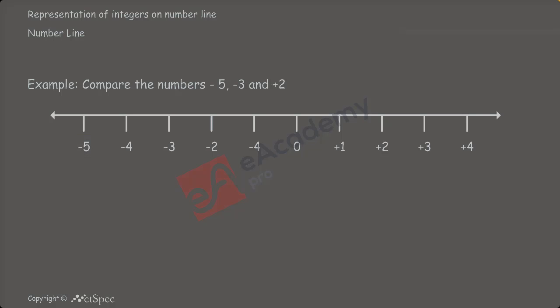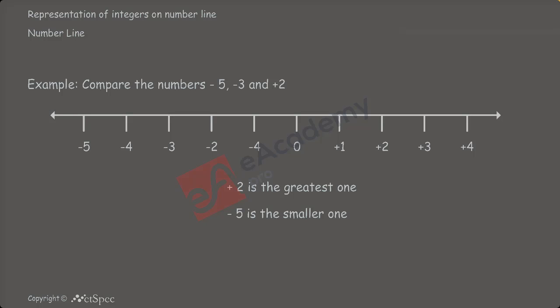On comparing all the three numbers, we can say that plus 2 is the greatest amongst the three numbers, and the smallest number would be the number lying to the extreme left. So, amongst the three numbers, the number lying to the extreme left is minus 5. So, minus 5 is the smallest number. We have now identified which is the smallest and largest number amongst the three numbers.